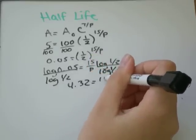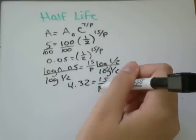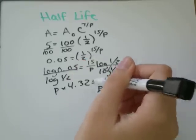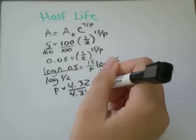When I divide log 0.05 by log of 1 half, we get 4.32 equals, those are cancelled out, and I'm left with 15 over p. Multiply both sides by p, get rid of it, divide by 4.32.